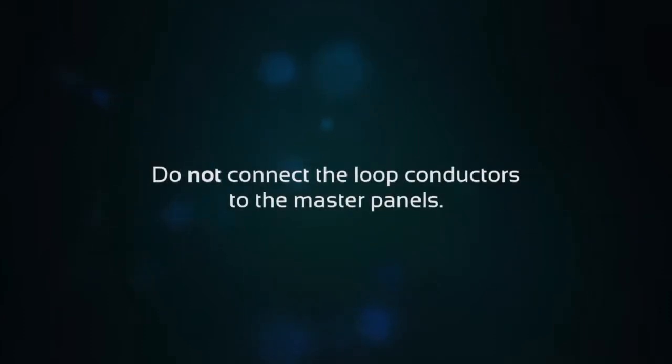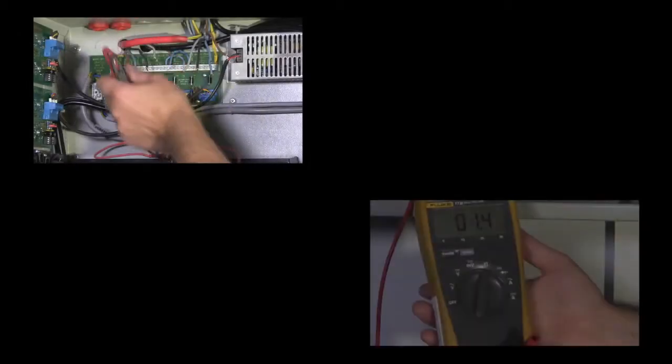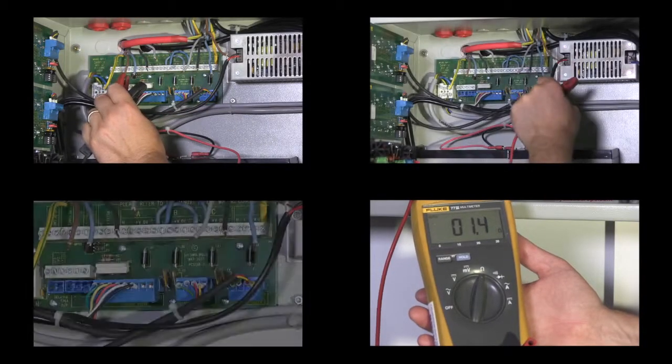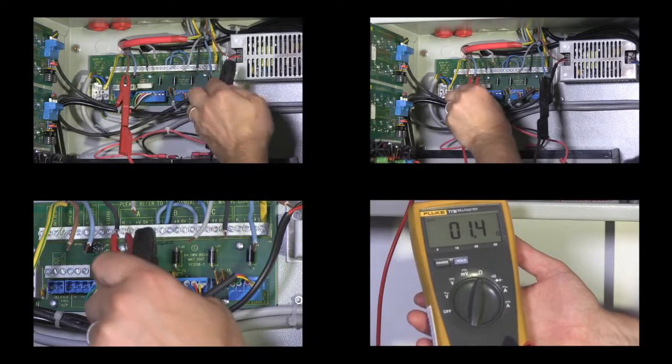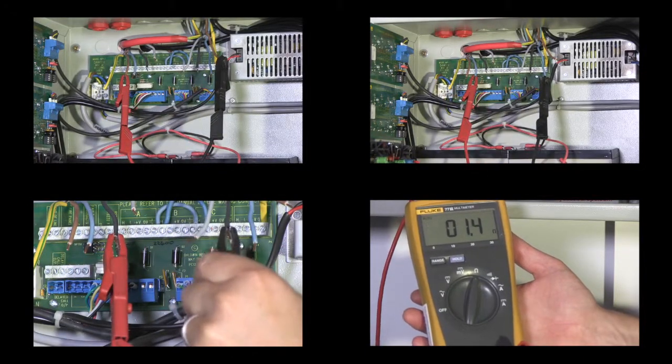Do not connect the loop conductors to the master panels. It is necessary to leave these as trailing ends. Now check each loop conductor with a multimeter to ensure there is full continuity and no shorts to earth or to any other conductors.